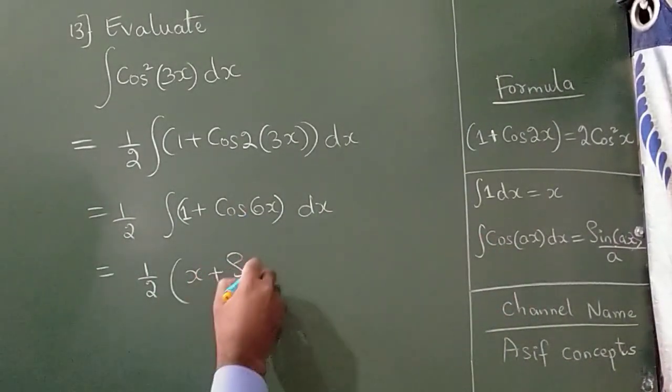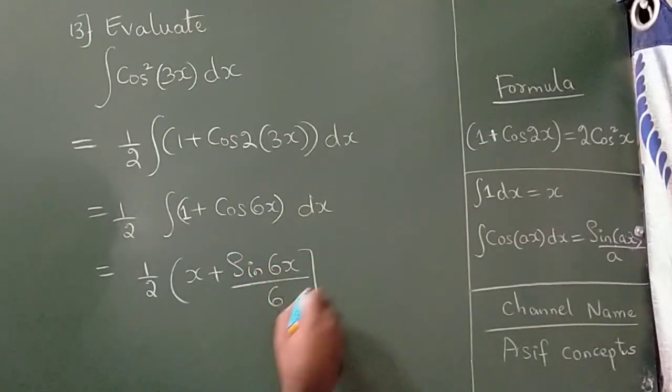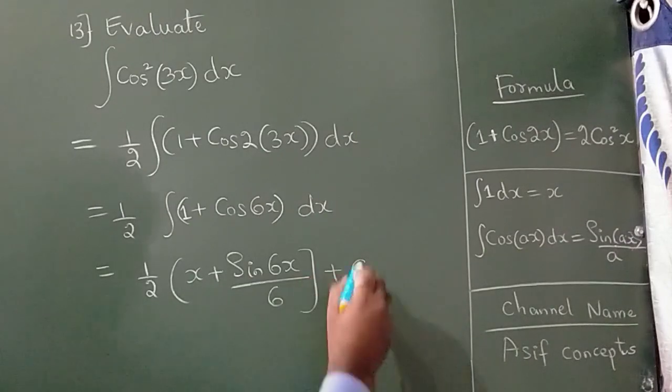the formula is sin 6x divided by 6, plus c. So this completes your answer.